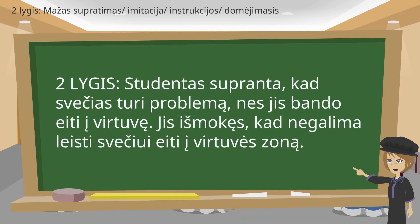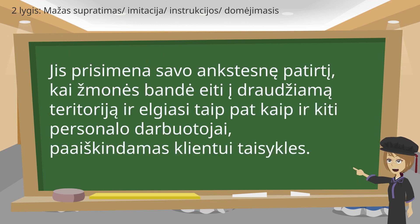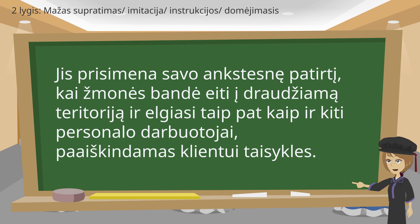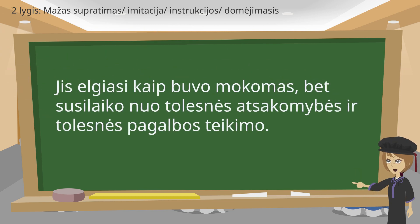The student has some understanding that the guest has a problem, as he is attempting to go inside the kitchen. His training dictates that he cannot allow the guest into the kitchen area. He recalls his previous experience about people trying to go inside a no-go area, and acts the same as other members of staff by explaining the rules to the customer. He follows his training, but he refrains from taking further responsibility and providing further assistance.